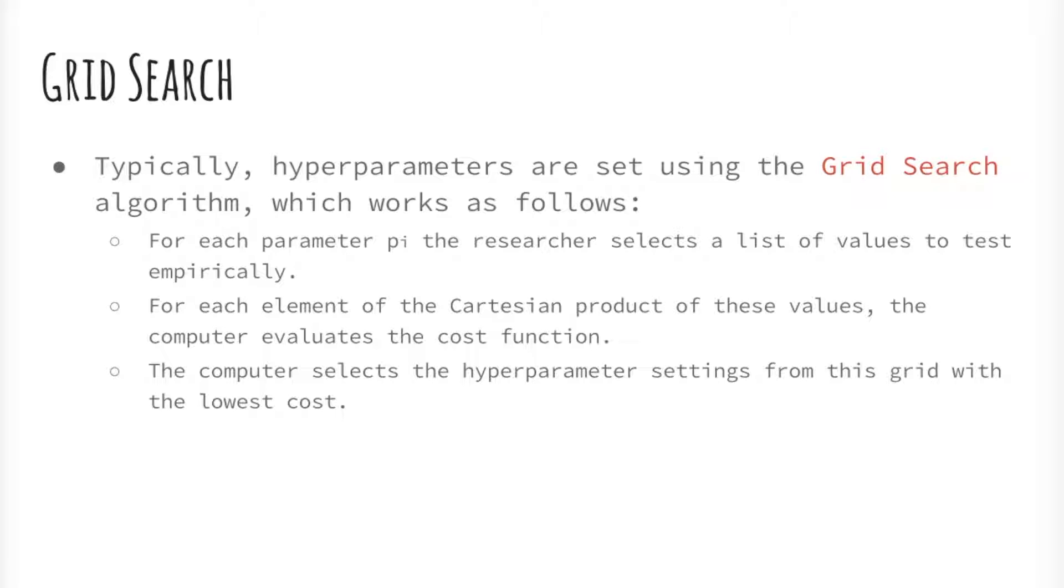Grid search, true to its name, picks out a grid of hyperparameter values, evaluates every one of them, and returns the winner. For example, if the hyperparameter is the number of leaves in a decision tree, then the grid could be 10, 20, 30, 100. For regularization parameters, it's common to use exponential scale: 1e-5, 1e-4, 1e-3, and so forth. Coming up with minimum and maximum values often requires some guesswork, so sometimes people run a small grid, see if the optimum lies at either endpoint, and then expand the grid in that direction. This is called a manual grid search.